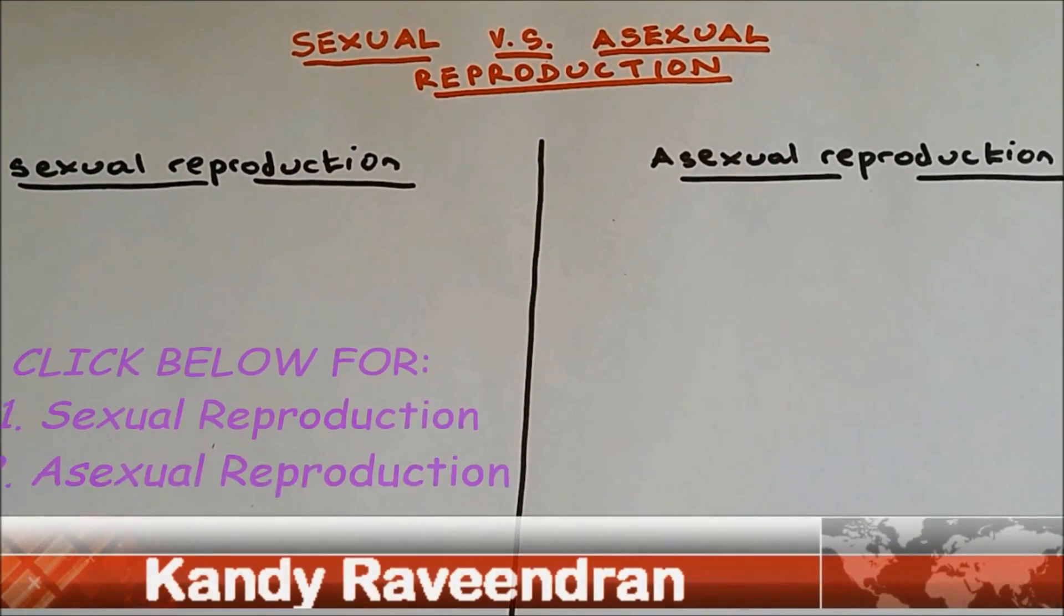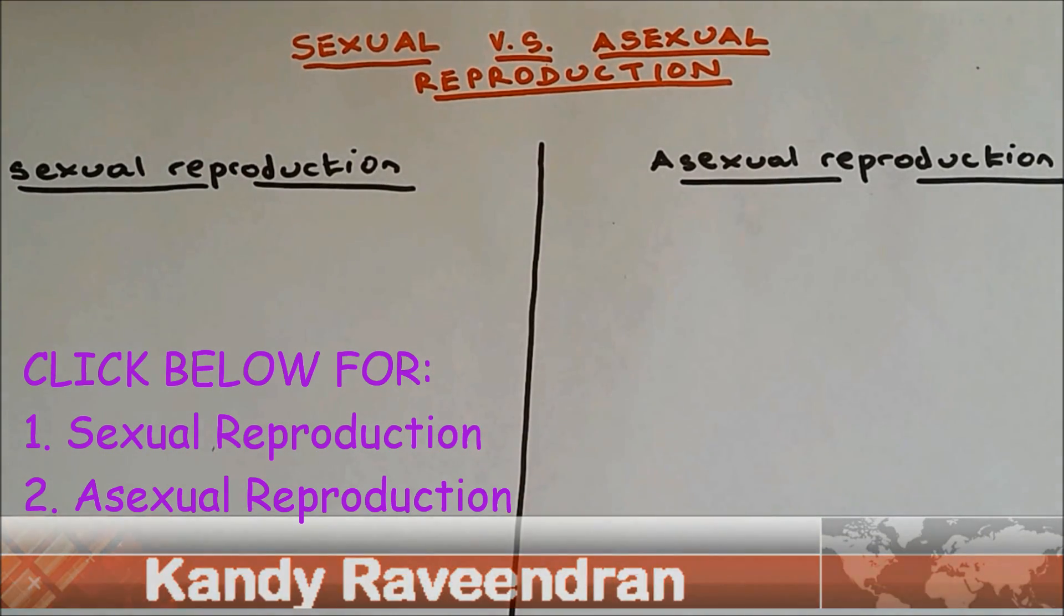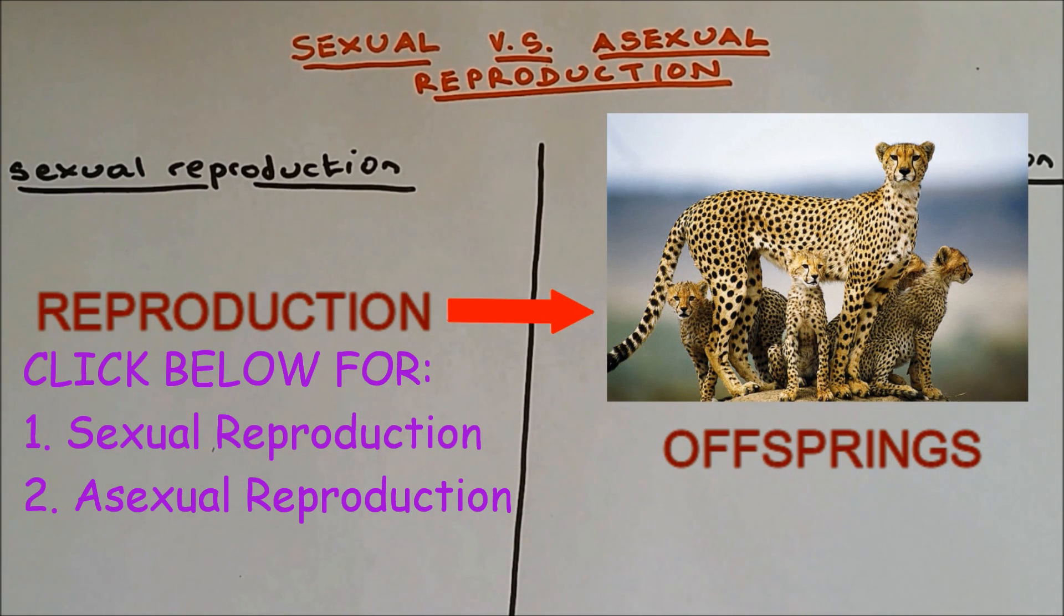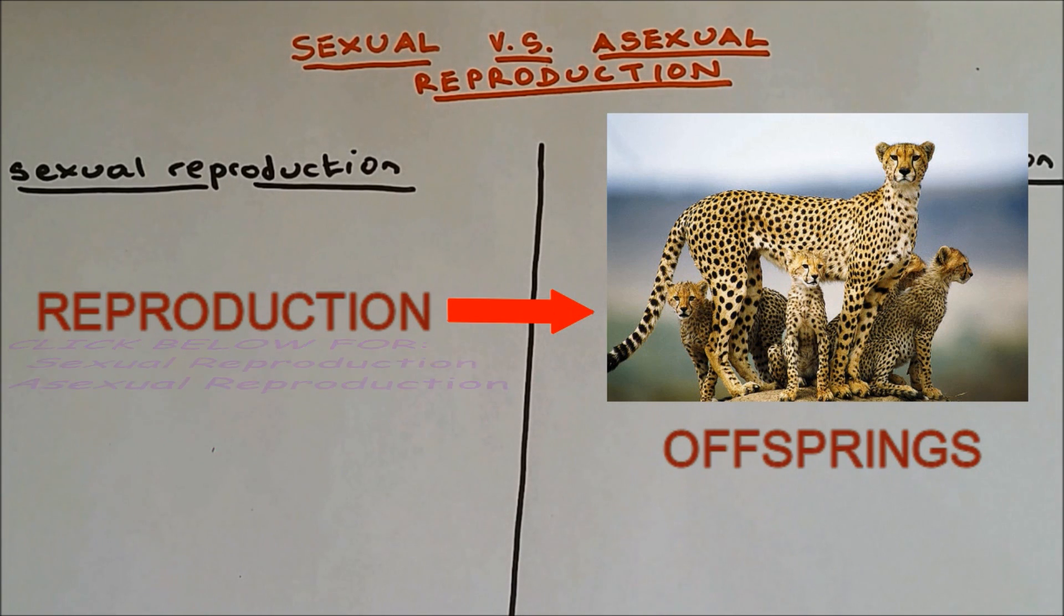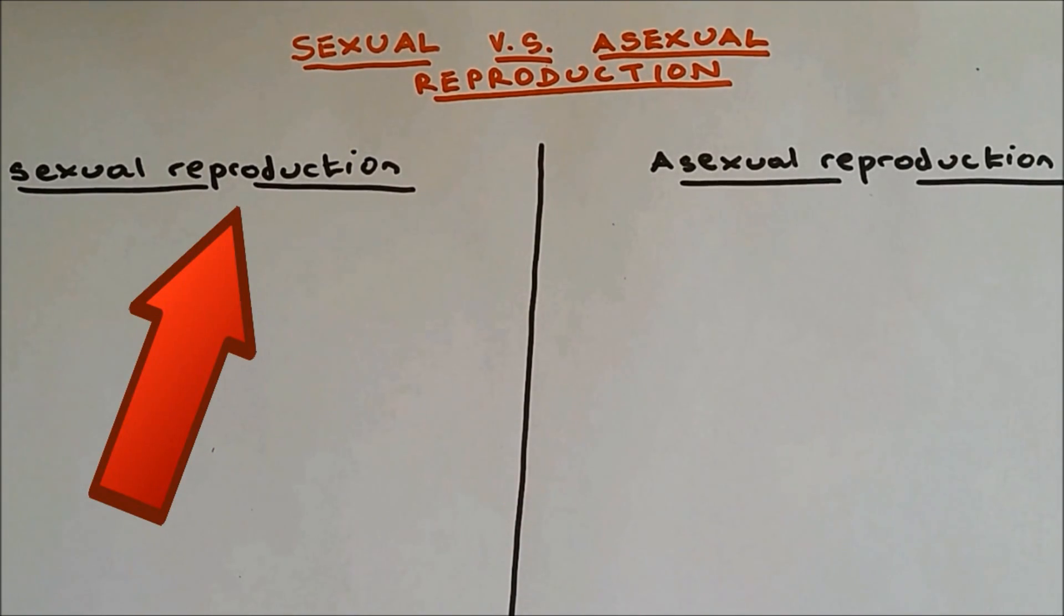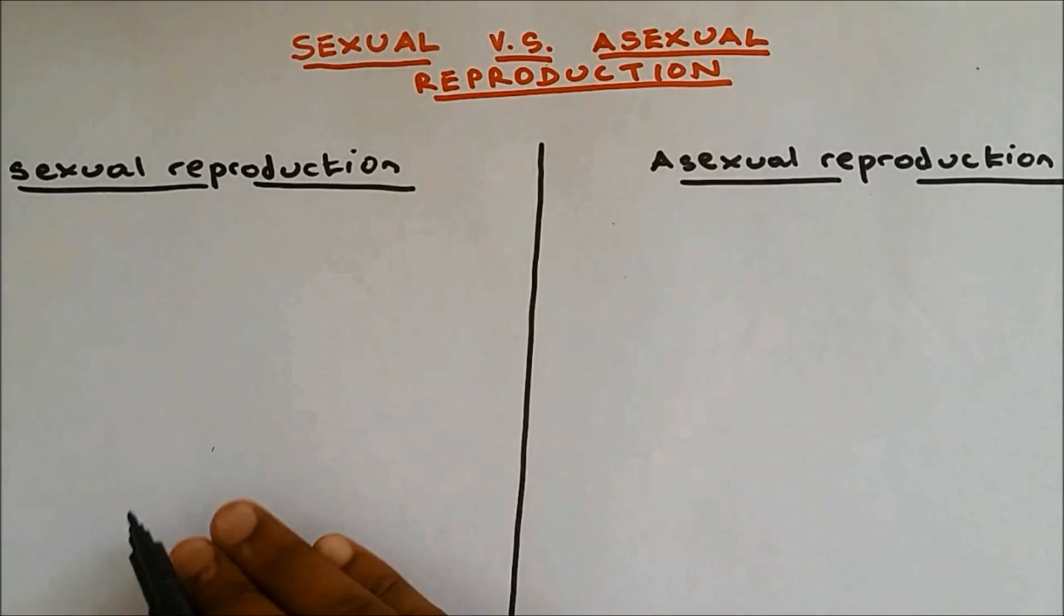Hi everyone, welcome to Science Tutorial For You. In this video, I'm going to describe sexual and asexual reproduction. Reproduction is when species produce their own kind in order to pass their genetic information to the next generation. Such reproduction can happen either by sexual or asexual methods depending on the species.